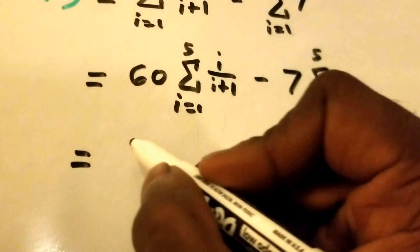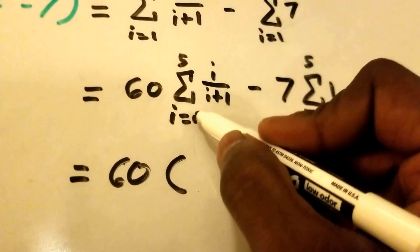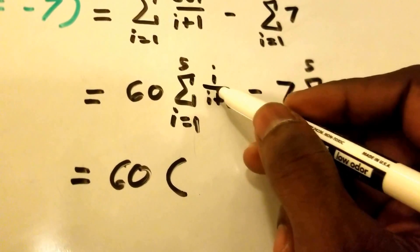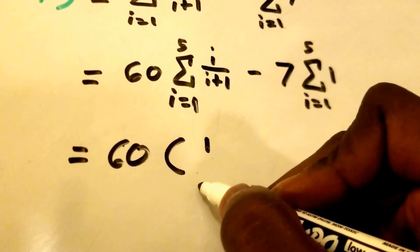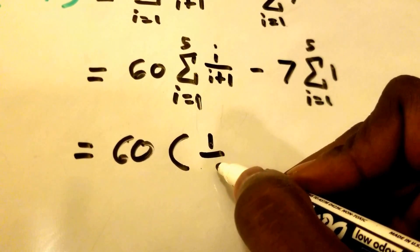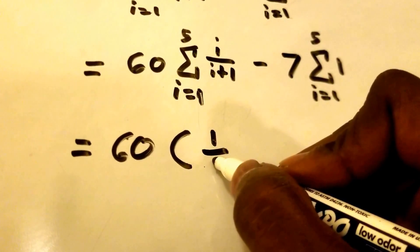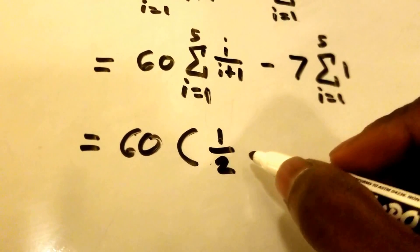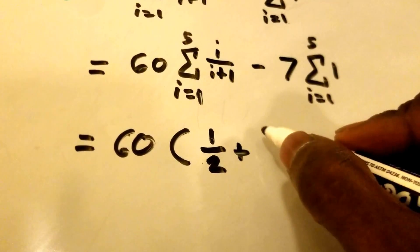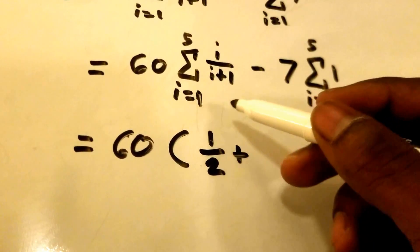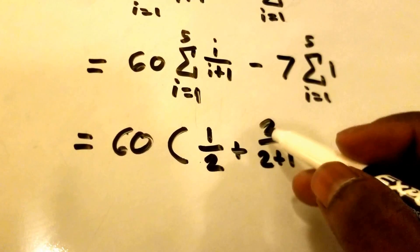So for the first summation, we're going to have a 1 in the numerator for the first iteration, and then 1 more than the numerator in the denominator — so 1 plus 1 which is 2. We're going to do this 5 times, so we get 1 half plus, now i increments to 2, giving us 2 divided by 2 plus 1, which equals 2 thirds.